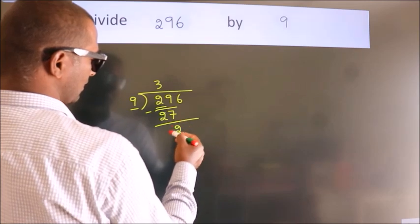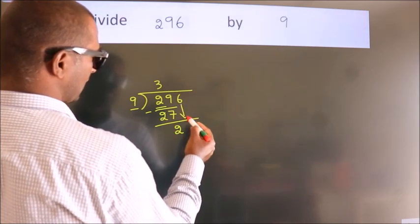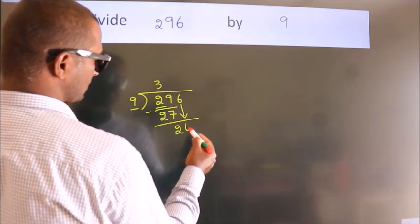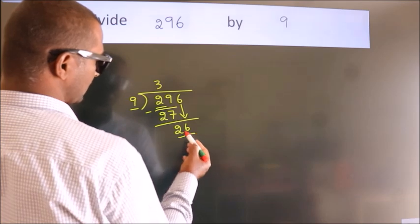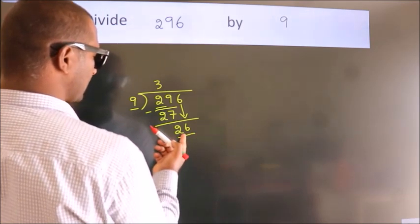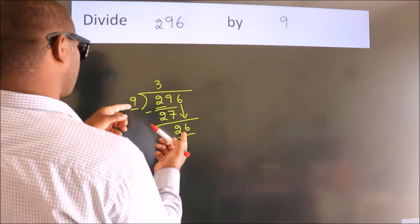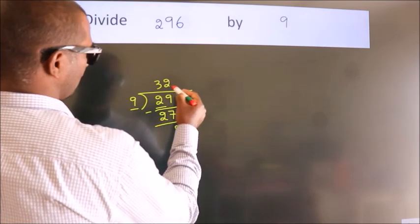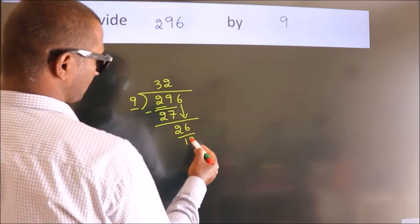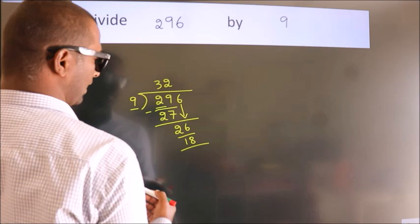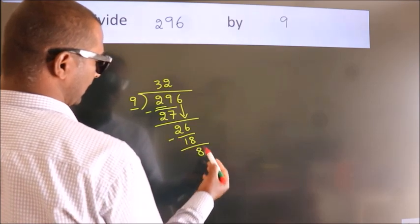After this, bring down the beside number. So 6 down, making 26. A number close to 26 in the 9 table is 9 twos, 18. Now we subtract. We get 8.